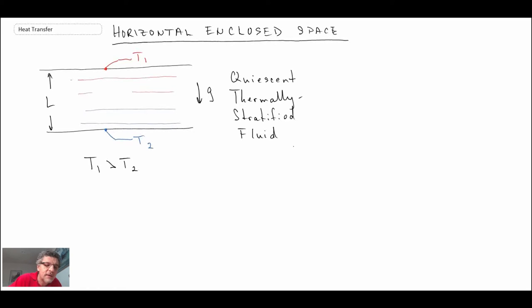The condition under which this would exist would be Grashof-Prandtl less than 1708. For this condition, the Nusselt number is going to be equal to one.